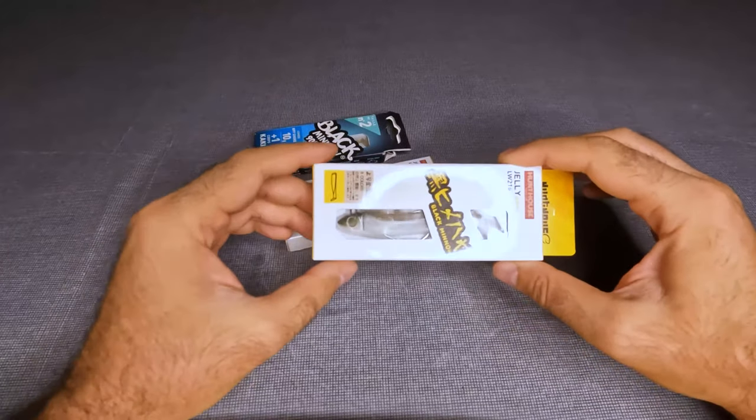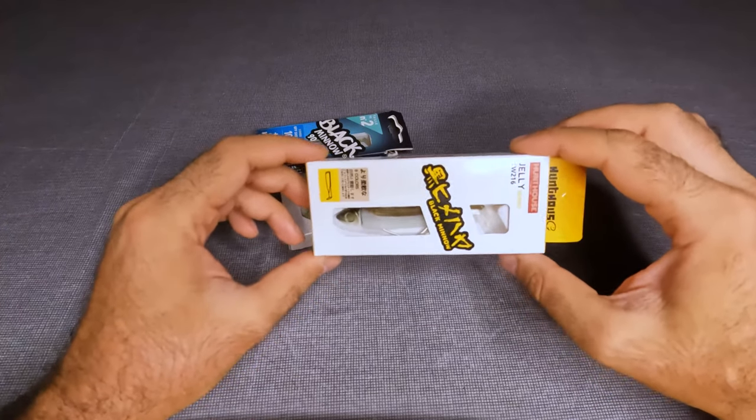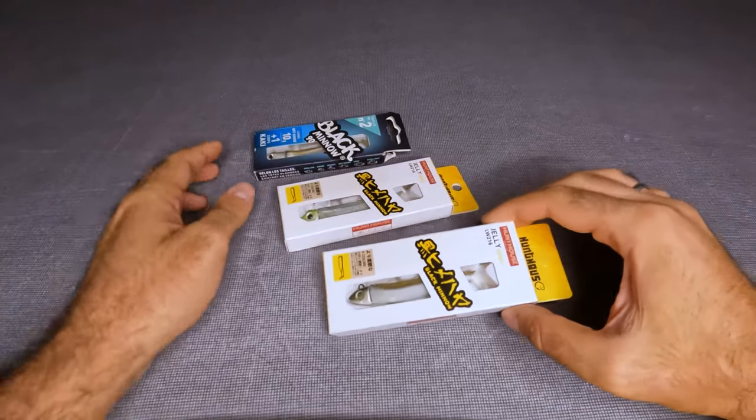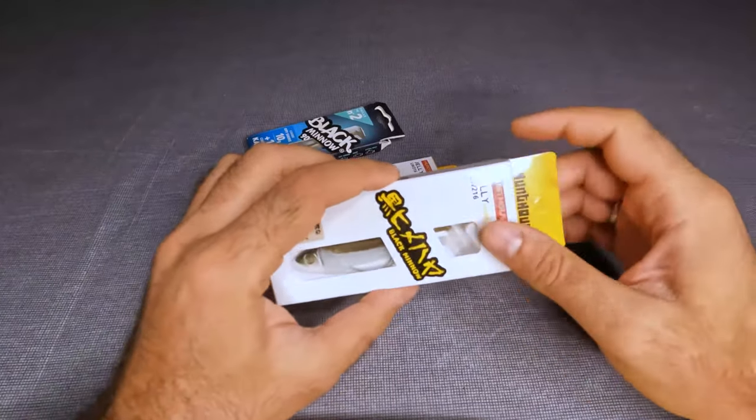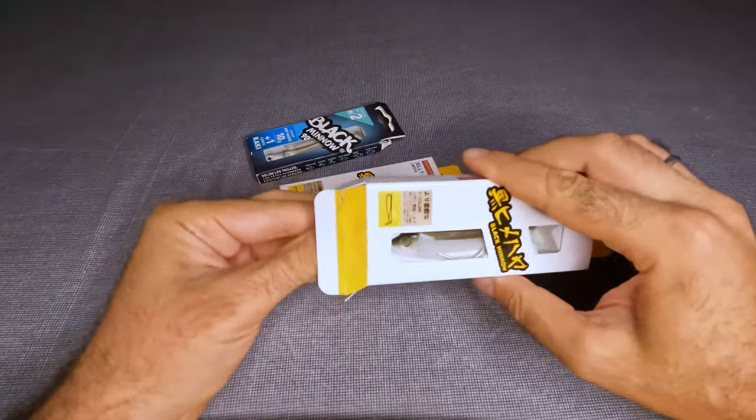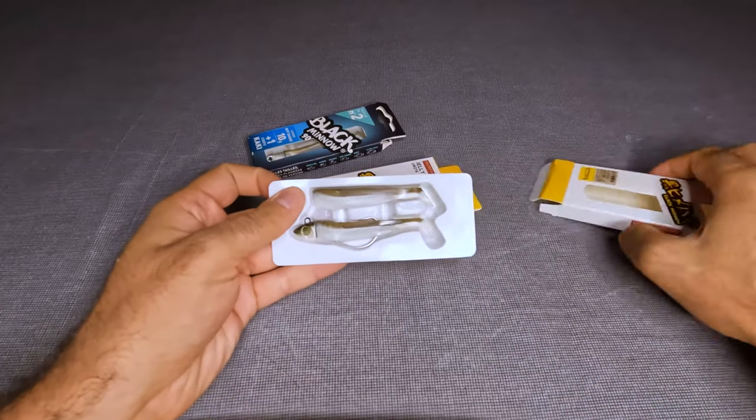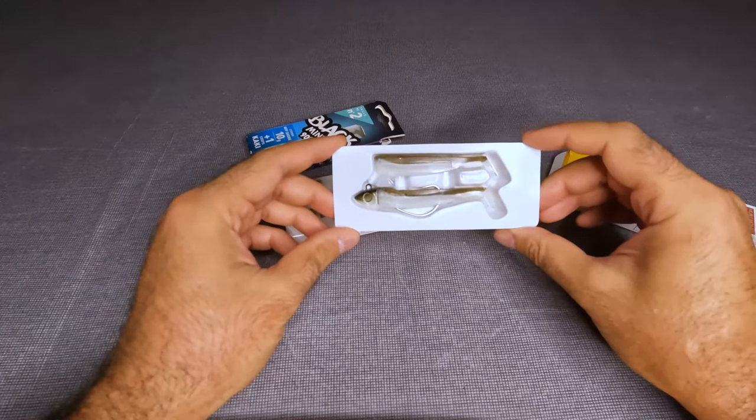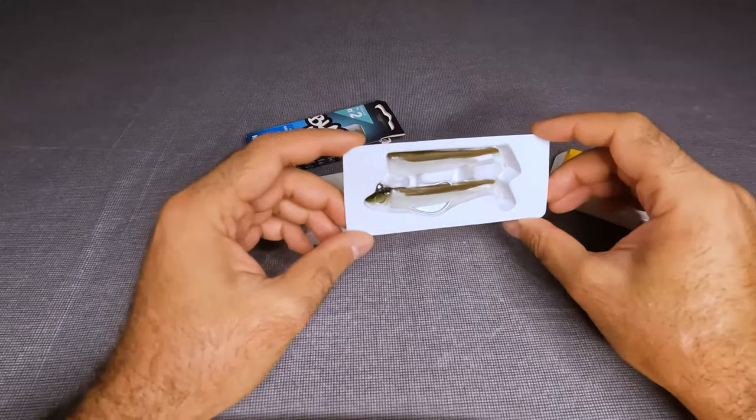So we're gonna start with this color, it's usually called khaki color which is one of the most authentic ones like the original. Let's open it and see if it's similar to the original one. Pretty much like the original we have two bodies and one jig head and a hook attached already.